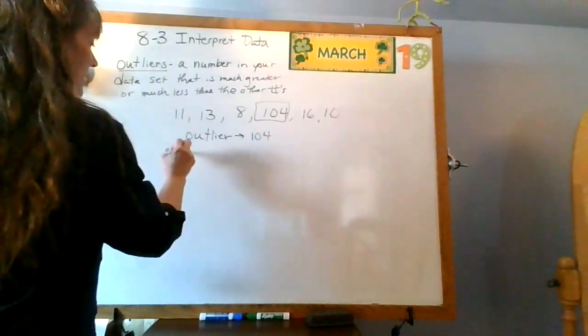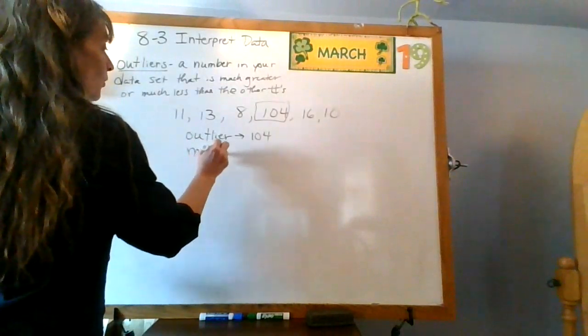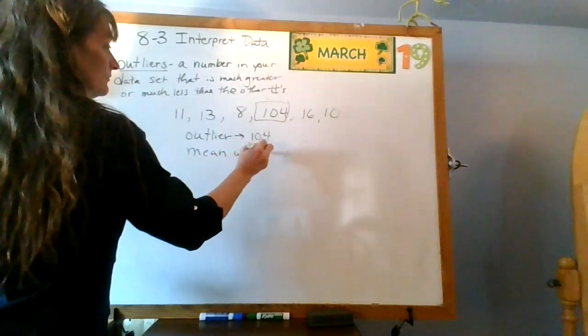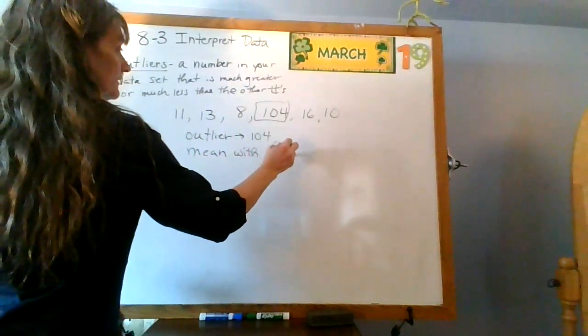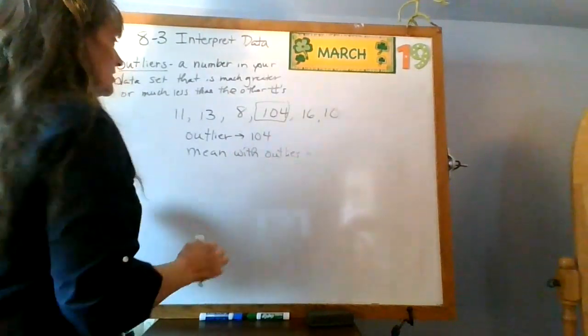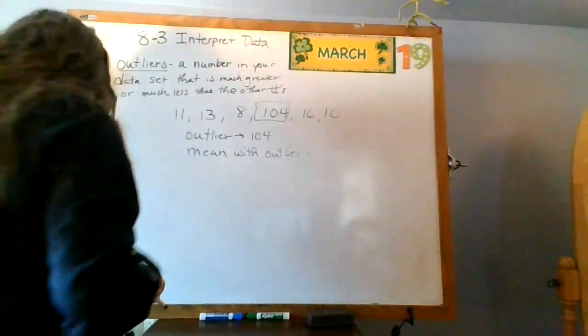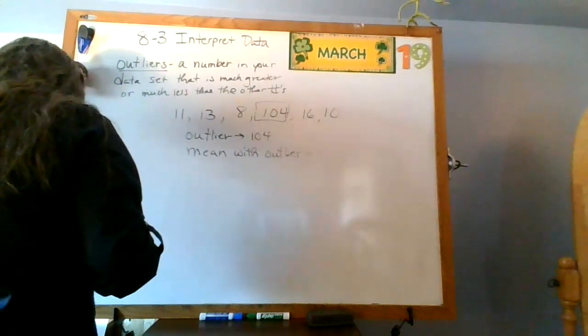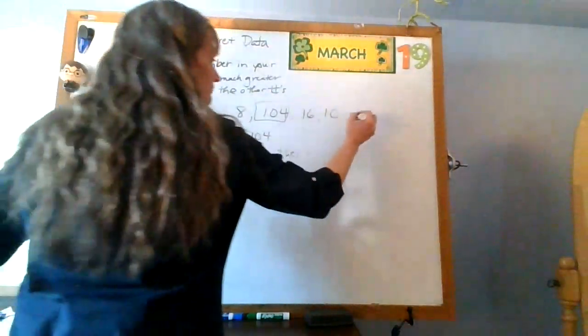Now, let's find the mean with my outlier, with the outlier. Okay, so, if I add all of those up, I'm going to get 58.